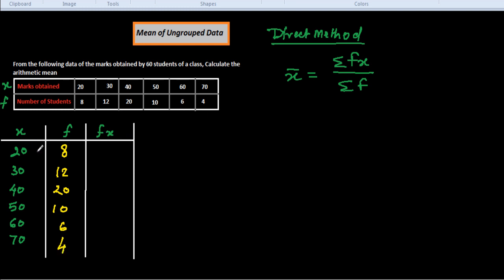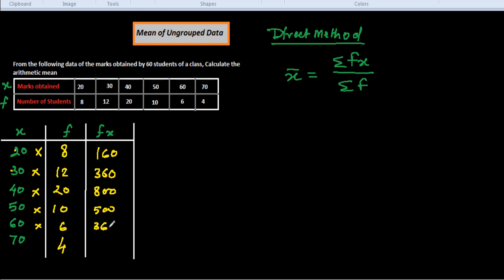Now we find the fx values by multiplication. 20 into 8 is 160. 30 into 12 is 360. 40 into 20 is 800. 50 into 10 is 500. 60 into 6 is 360. 70 into 4 is 280.